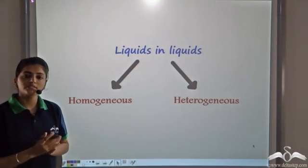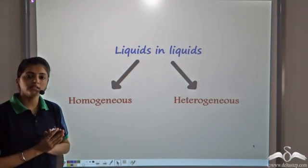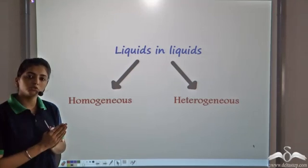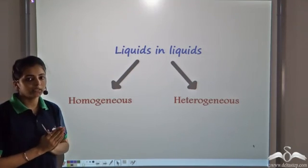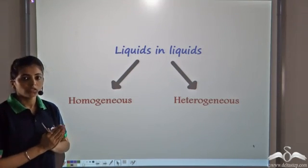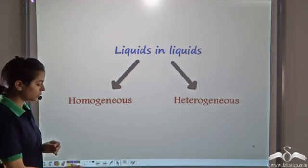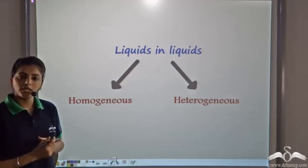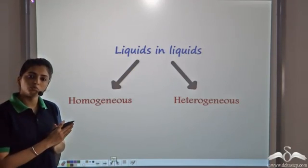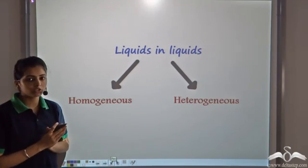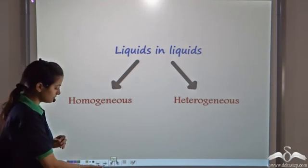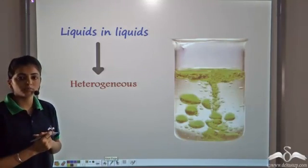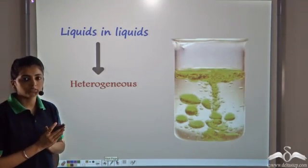We have already seen the separation techniques for a solid-liquid mixture when it was homogeneous and heterogeneous. Now let's look at a liquid-liquid mixture. A liquid-liquid mixture can be homogeneous or heterogeneous. Let's start with a heterogeneous mixture of two liquids.